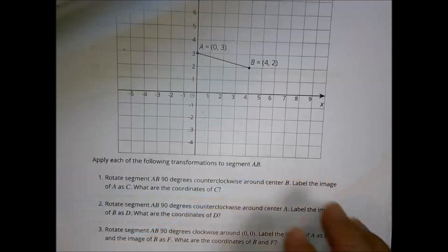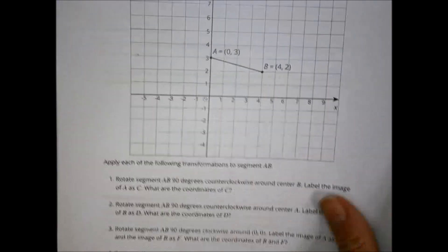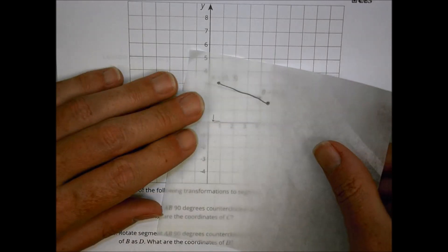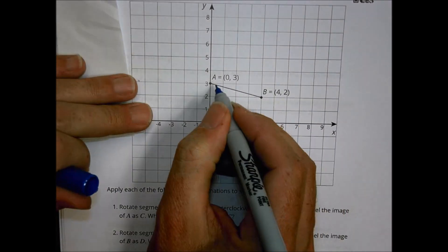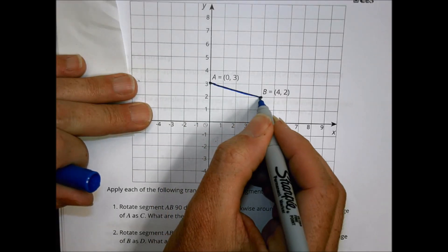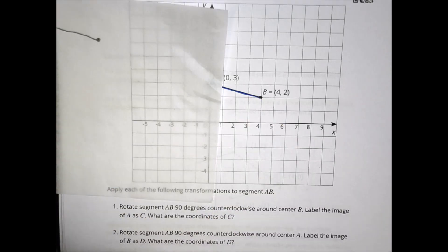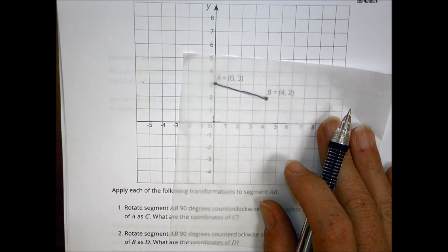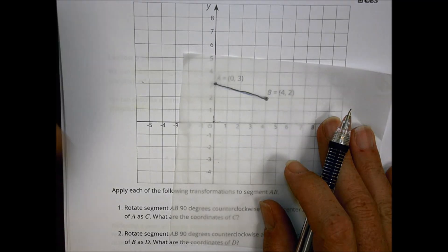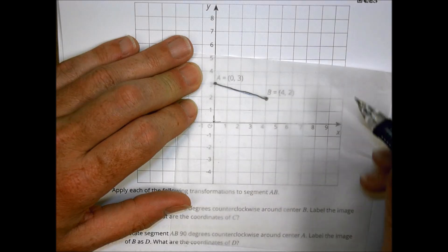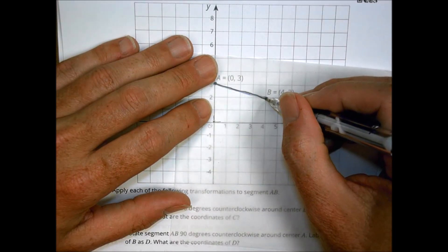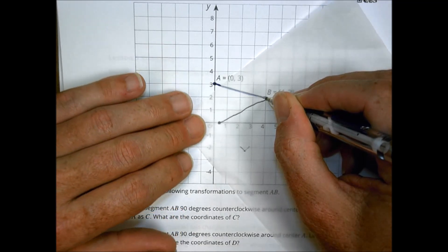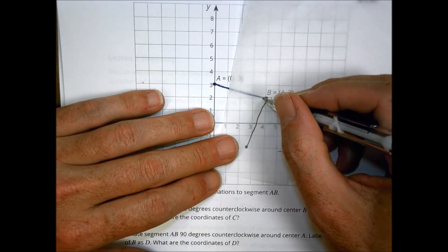So that's what happens when we reflect things back and forth. You then spent time with line segments using patty paper. For segment AB, the first task was to rotate it 90 degrees counterclockwise around center B. Keeping B fixed, I rotate until I form a right angle. Because we're on grid paper, the endpoint lands on an actual grid point.